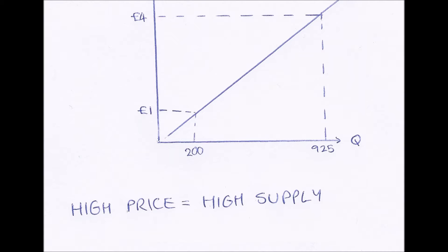Hello everybody and welcome to this microeconomic video on supply and supply curves. So firstly, what is supply? Supply is determined as how much producers are willing to supply at a certain price over a period of time — how much businesses will produce depending on the price of the good over time.